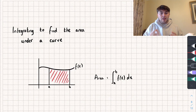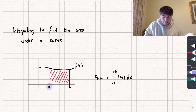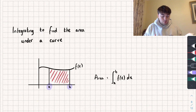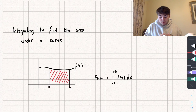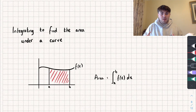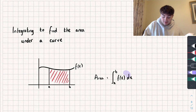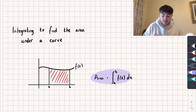We want to find the area below that curve between the points x equals a and x equals b — so the area of that red shaded region. To do that, all we need to do is calculate the definite integral of that function of x between the limits a and b, and that will give us the area. That is the formula there.